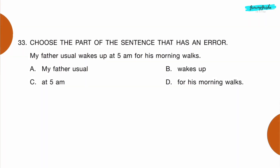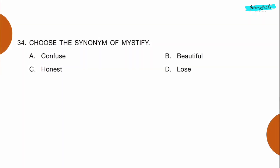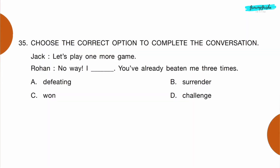Question 33: Choose the part of the sentence that has an error — 'My father usual wakes up at 5 AM for his morning walks.' Option A is wrong — it should be 'my father usually wakes.' Question 34: Choose the synonym of 'mystify.' Option A: confuse.